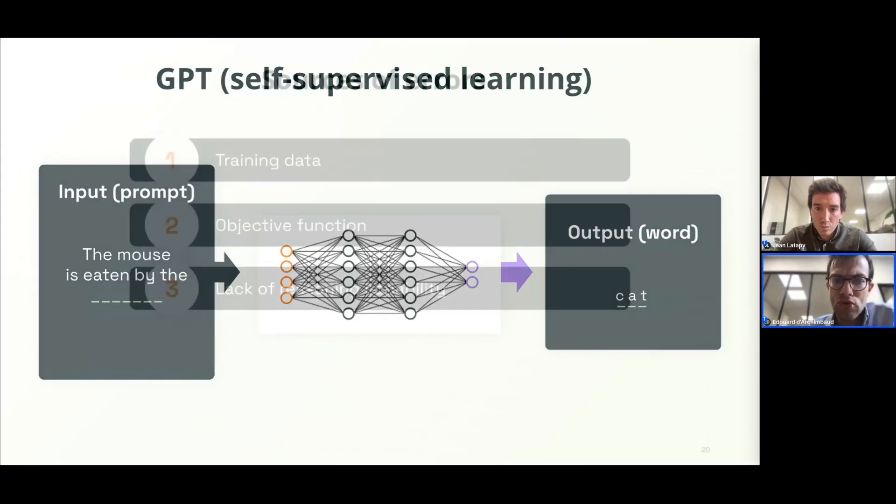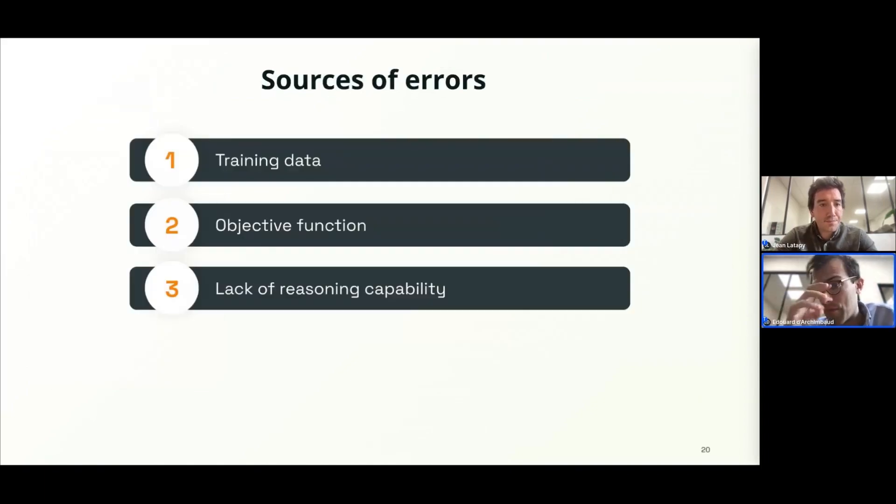The third source of mistakes is that because of this optimization function, a large language model lacks reasoning capabilities. So they are not designed to do it. It's more like an emerging capability, emerging skill of the model, but they are not designed to do that.